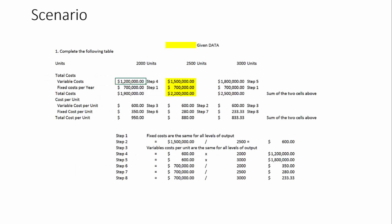Here is our scenario. In this problem we have been given some data and are asked to fill in the rest of the pieces of information based on those few elements. Under the 2,500 units scenario we have been given variable costs of $1,500,000 and fixed costs for the year of $700,000, for a total cost of $2.2 million. From there we figure out how all of the rest of the table is filled out.